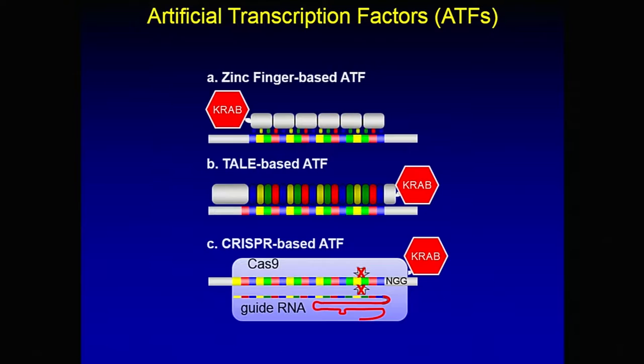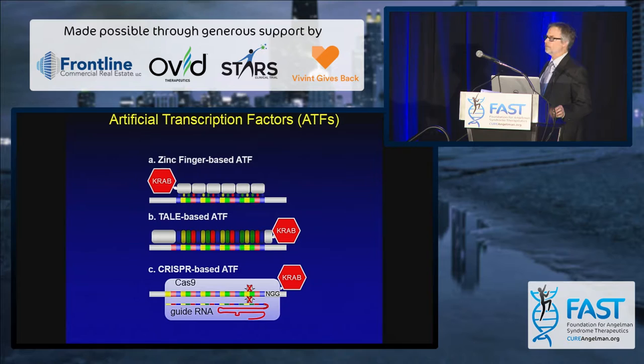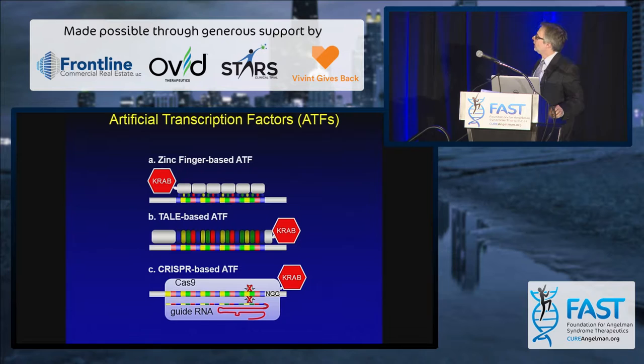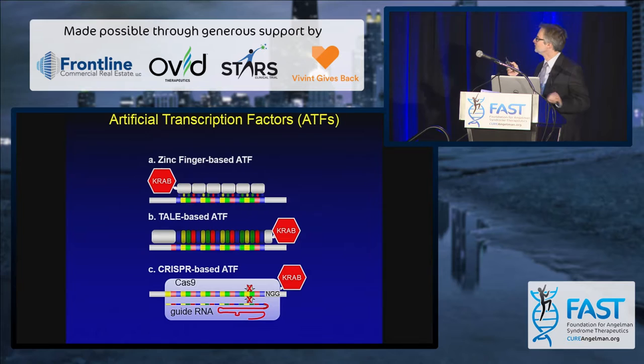We can steal the activating or repressing part off of other transcription factors. Essentially, we can design an artificial transcription factor that will go to the gene we want, like UBE3A, and we can put on another part that will either activate or repress that gene. There are a couple of recently described platforms for doing this: zinc fingers, something called TALs, and more recently, something called CRISPR-Cas9, which is very famous and in the news a lot. All of those things could be used to make artificial transcription factors.